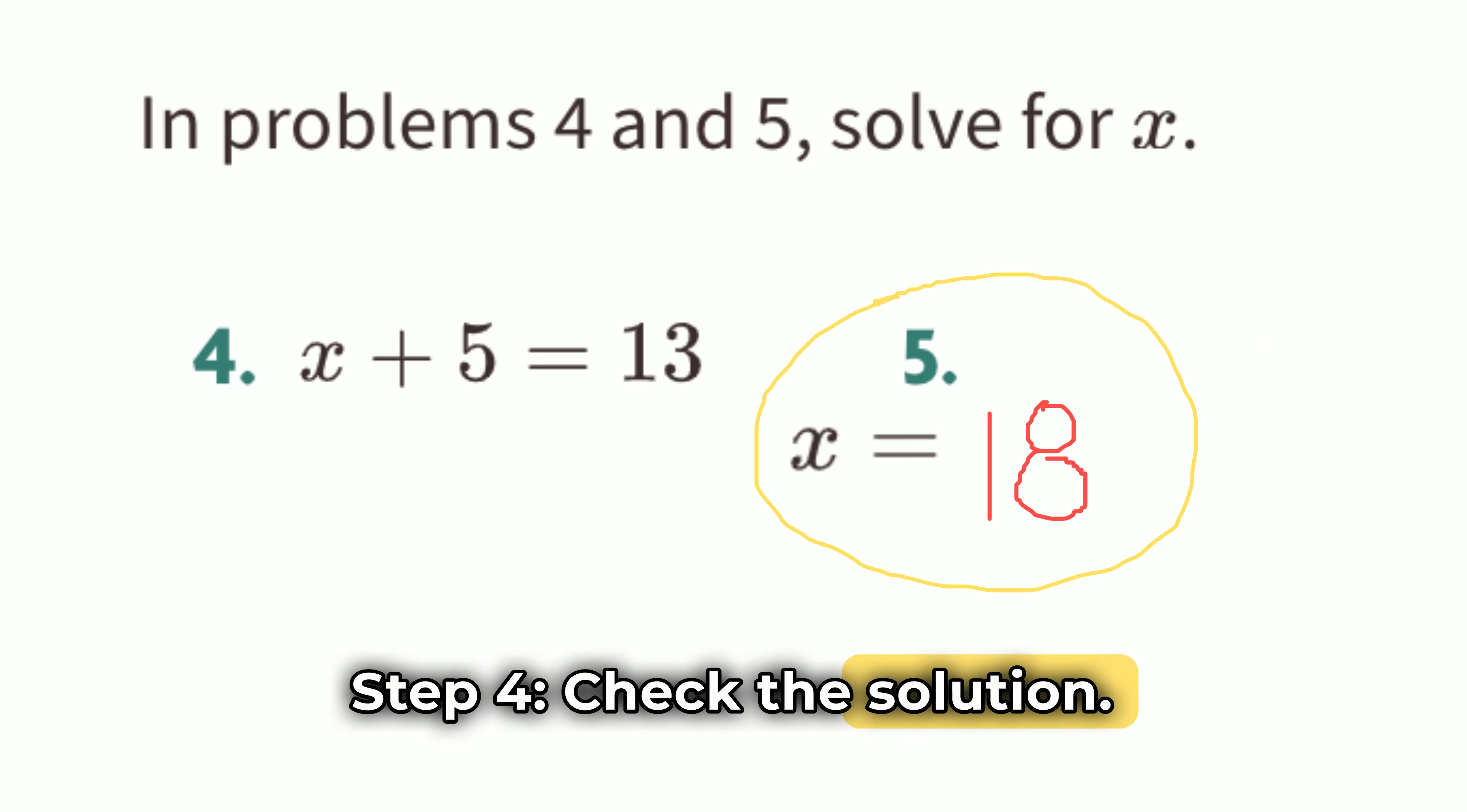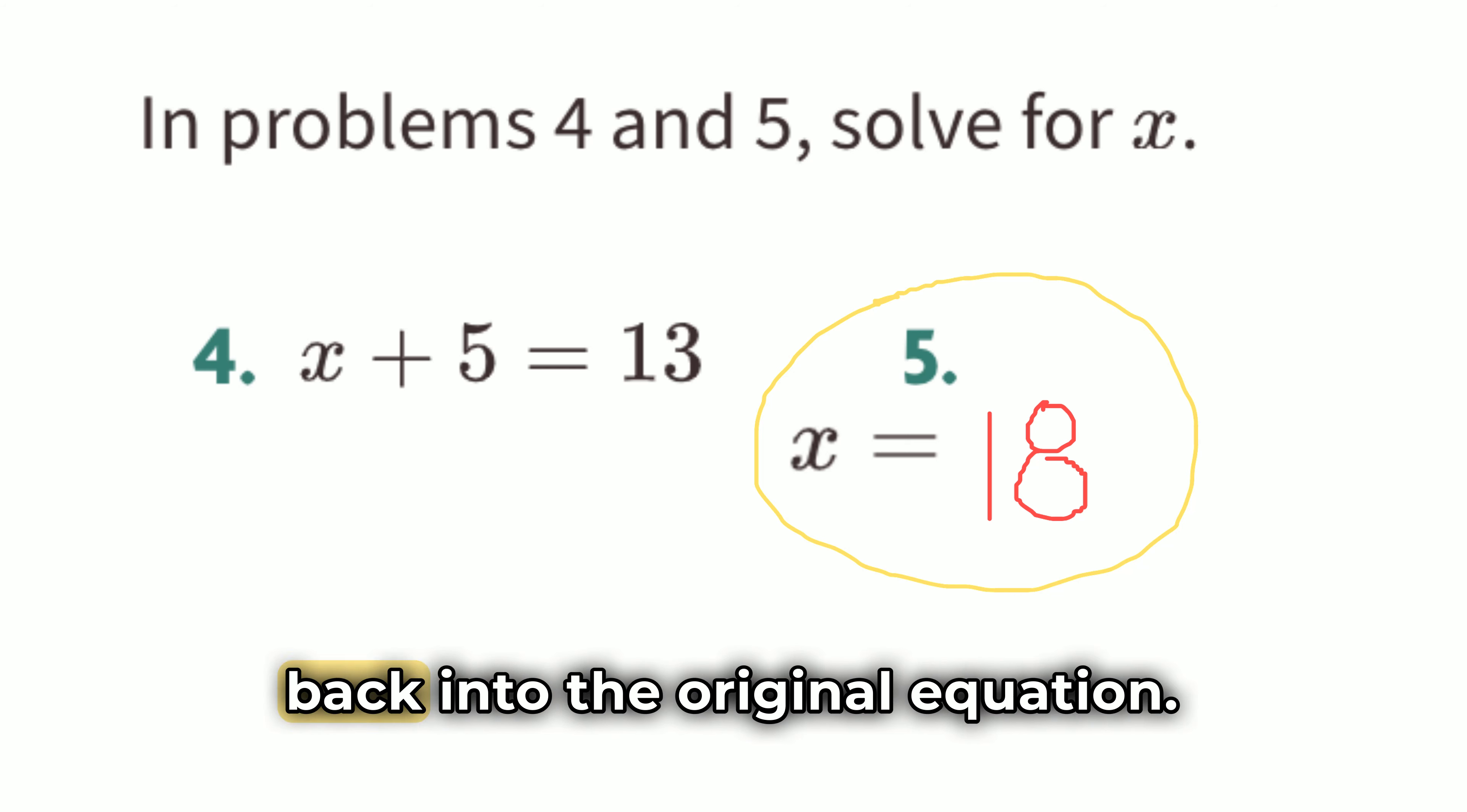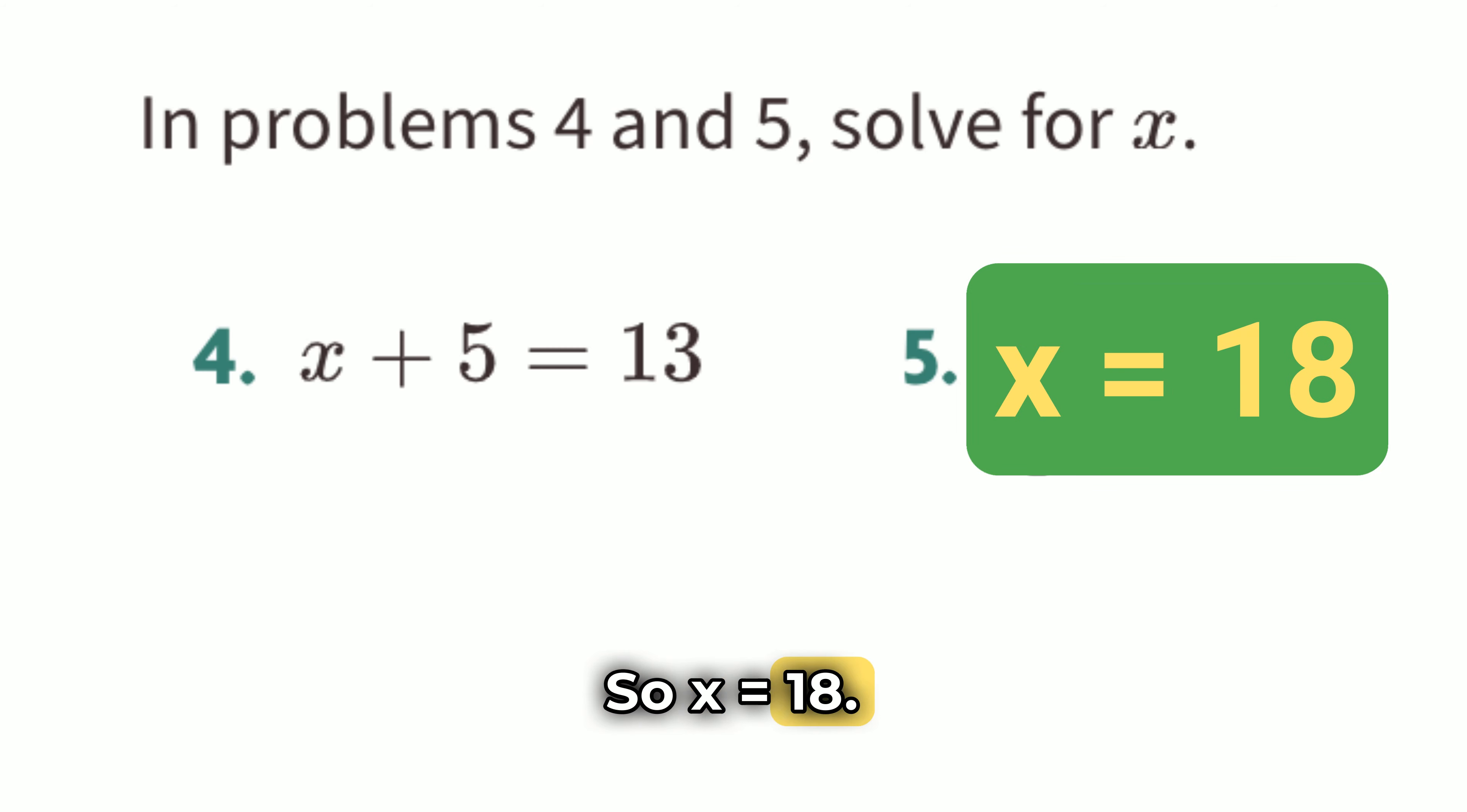Step 4. Check the solution. To make sure our answer is correct, let's plug x equals 18 back into the original equation. 2 thirds times 18 equals 12. Since 2 thirds times 18 does equal 12, the solution is correct. So, x equals 18.